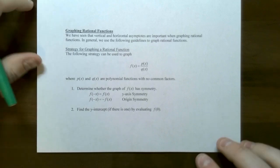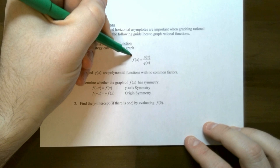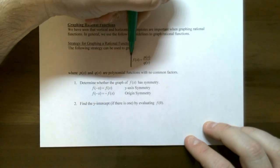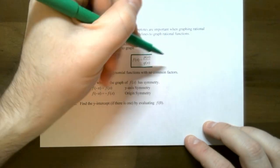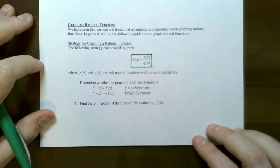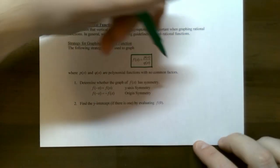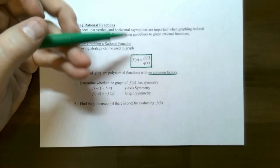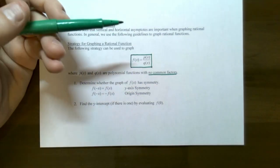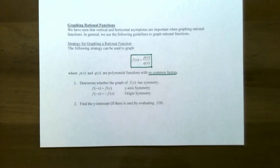Now we're going to use this strategy on how to graph a rational function, where a rational function is of this form: f of x equals p of x divided by q of x, and p of x and q of x are polynomial functions but they have no common factors. If there is a common factor, make sure you cancel it first and then graph the rational function.